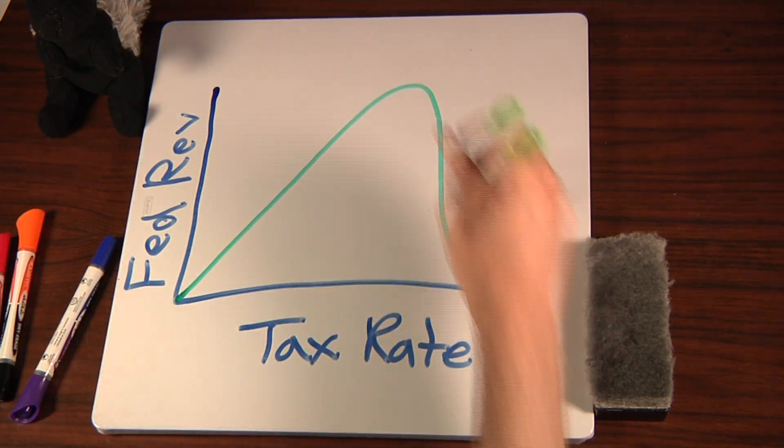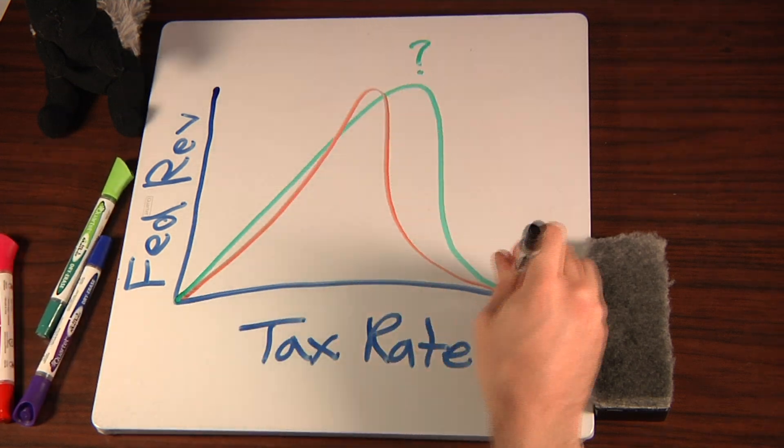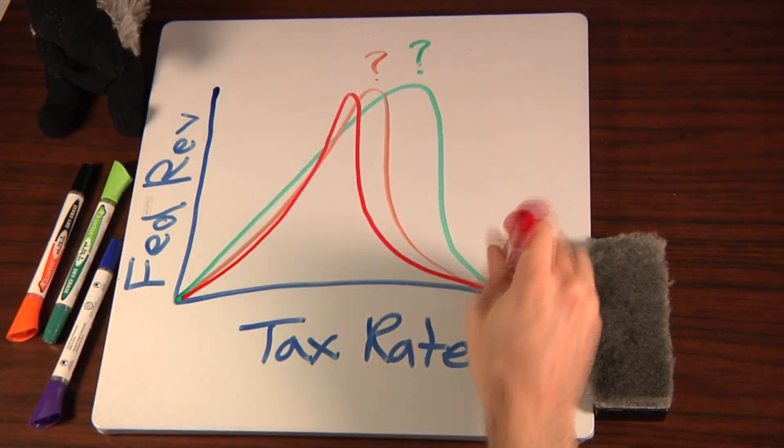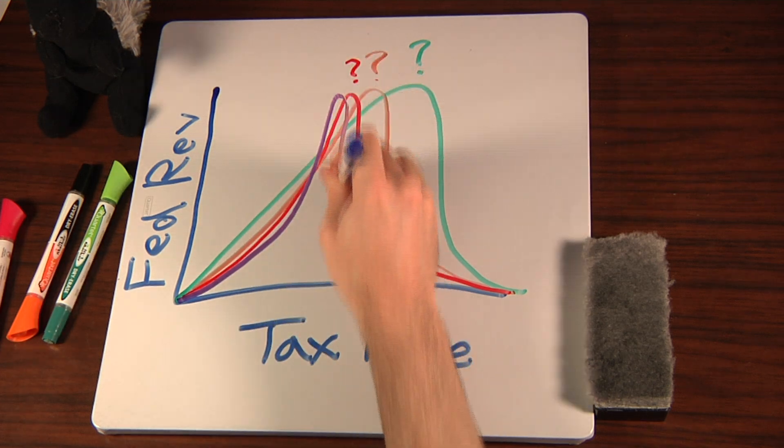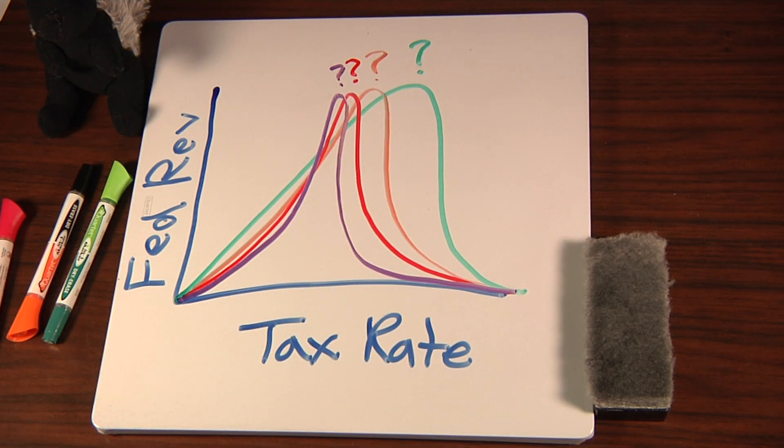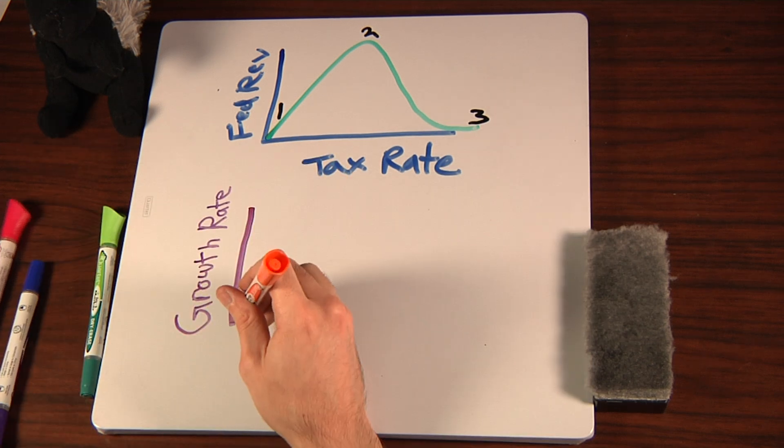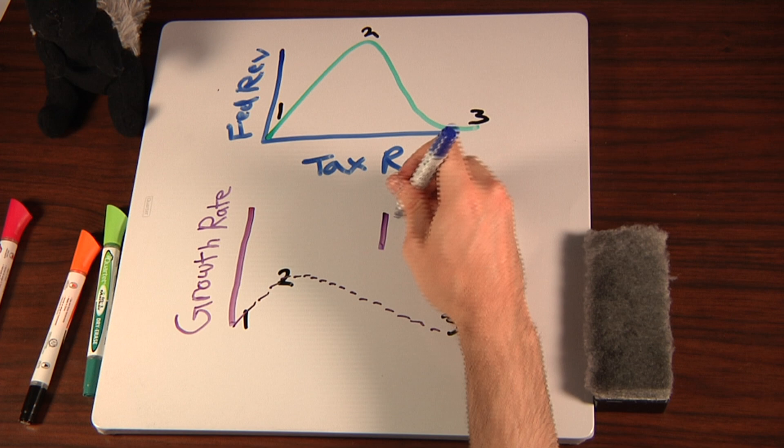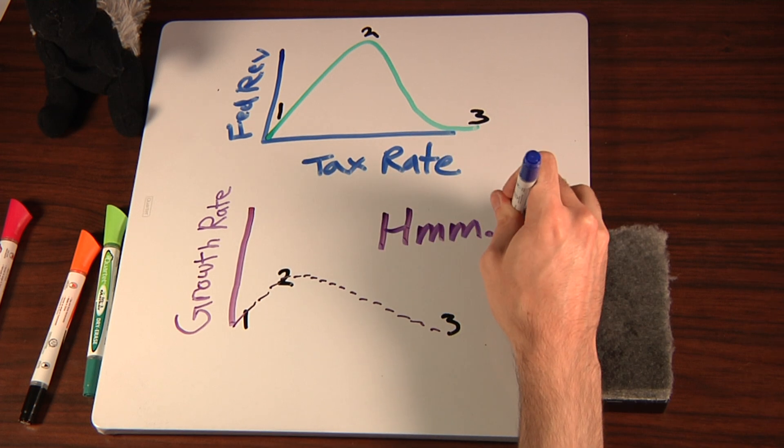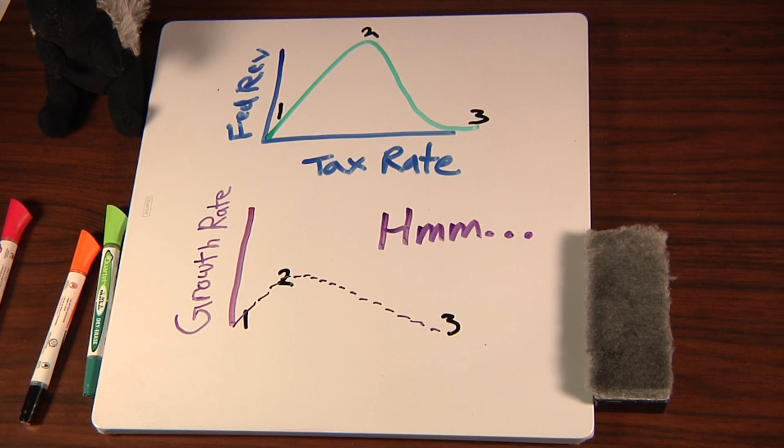So instead of asking, where are we on the Laffer curve, ask, which Laffer curve are we on? That is, how far into the future are we concerned? And if our curve based on three points turns out to change over time, how about this other curve based on three points, this underlying growth curve? Does it shift or change or get squozen over time too?